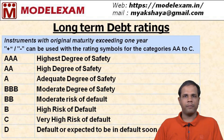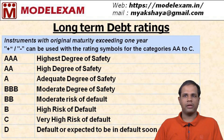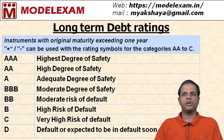As is evident from the tabular column, AAA is the highest rating and D is the lowest. As the rating comes down, the safety aspect decreases and the default risk increases. In India, ratings up to BBB minus are generally categorized as investment grade, while any rating below that — from BB plus down to D — is generally known as speculative grade, which carries high default risk.